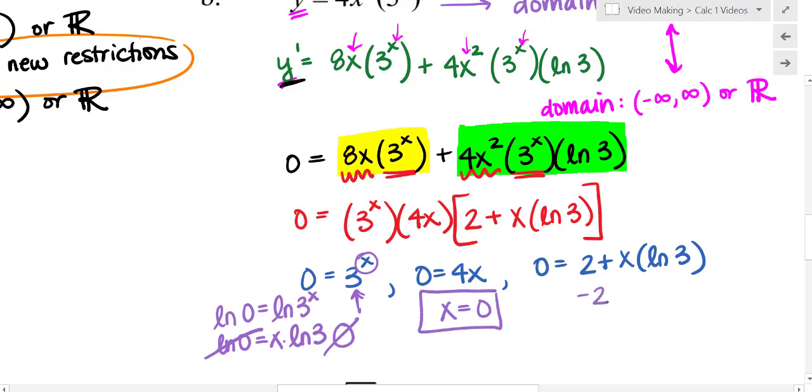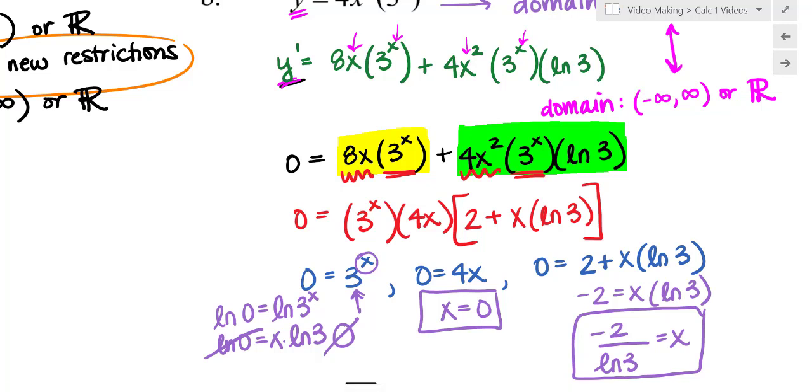The second factor here gets me x equals 0. And the third, if I subtract 2 and then divide by natural log of 3, you do want to keep this exact. So I would just say x equals negative 2 over natural log of 3. So in this case, I have two critical values because, again, I had nothing else to add from any new restrictions to my domain.